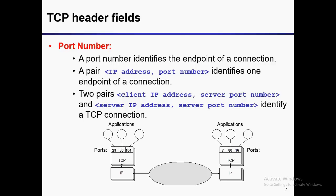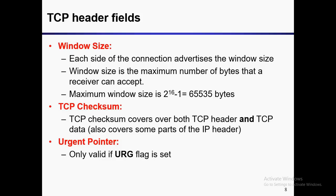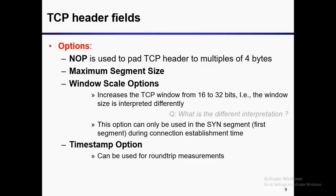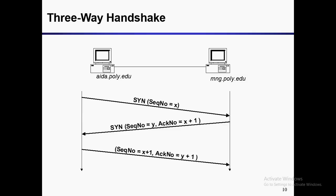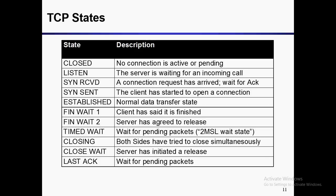To recap: port number identifies the endpoint of a connection — a pair of IP addresses and port number identifies one endpoint. Window size is the maximum number of bytes a receiver can accept. TCP checksum covers both TCP header and TCP data. Urgent pointer is only valid if the URG flag is set. Options include maximum segment size, window scale, and timestamp option — we'll cover these in the next video.